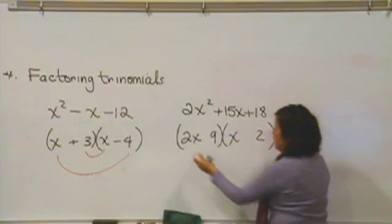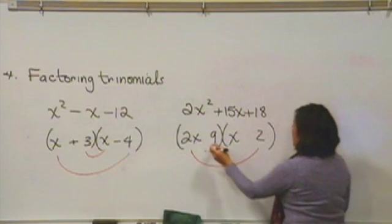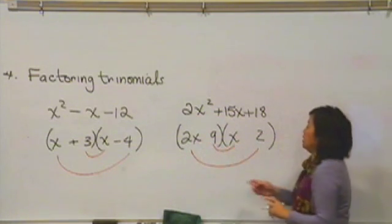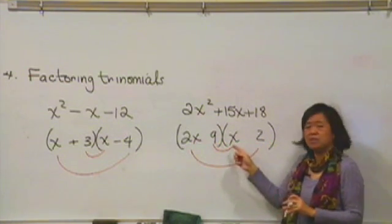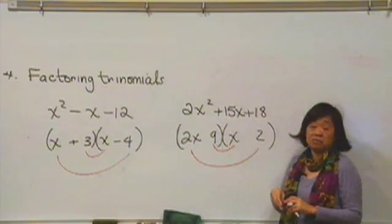If you check the outside and the inside, the outside give you 4x, the inside give you 9x. 4 and 9, there's no way to make that into a 15.